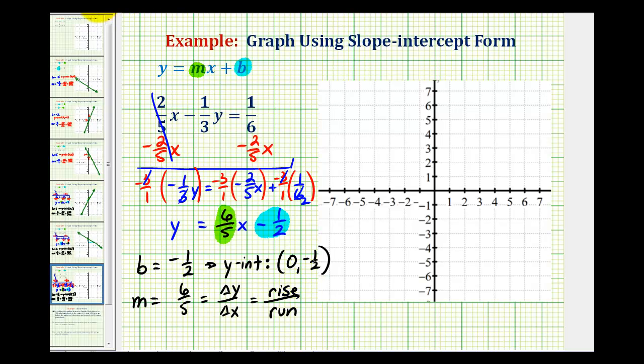So now to graph this line, we're first going to plot the y-intercept, which is negative one-half, so it's going to be right about here. And then we'll use the slope to find another point on this line. Since the numerator is positive six, which represents the change in y, we'll move up six units and then since the denominator is positive five, which represents the change of x, we'll move right five units from the y-intercept.